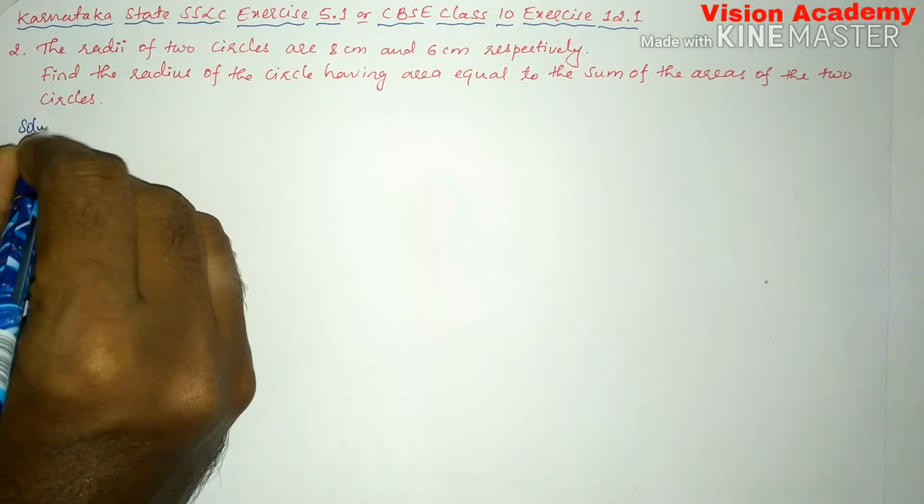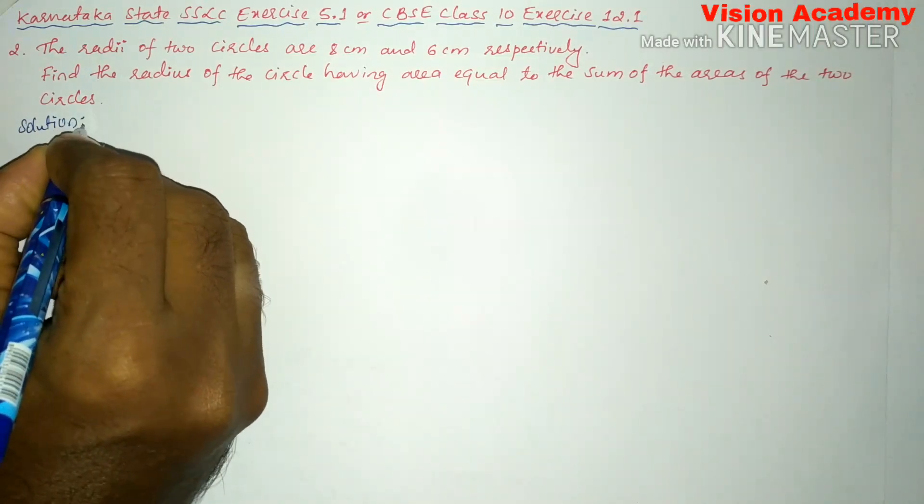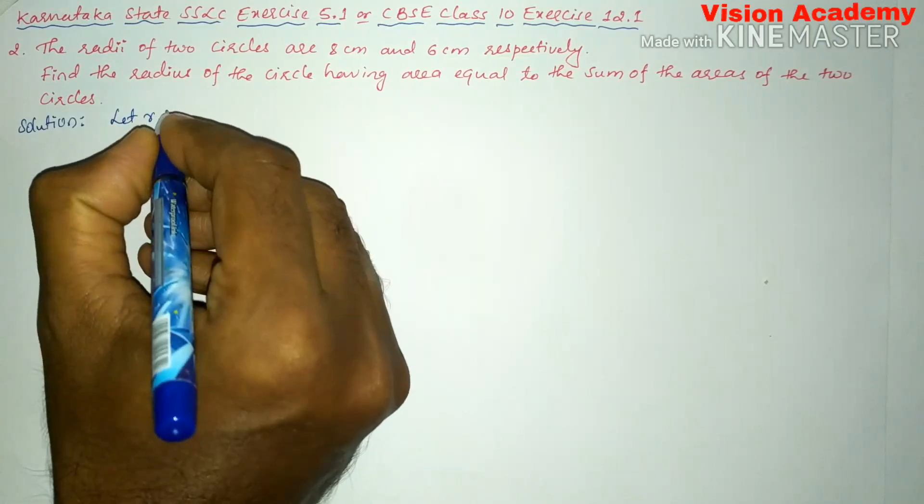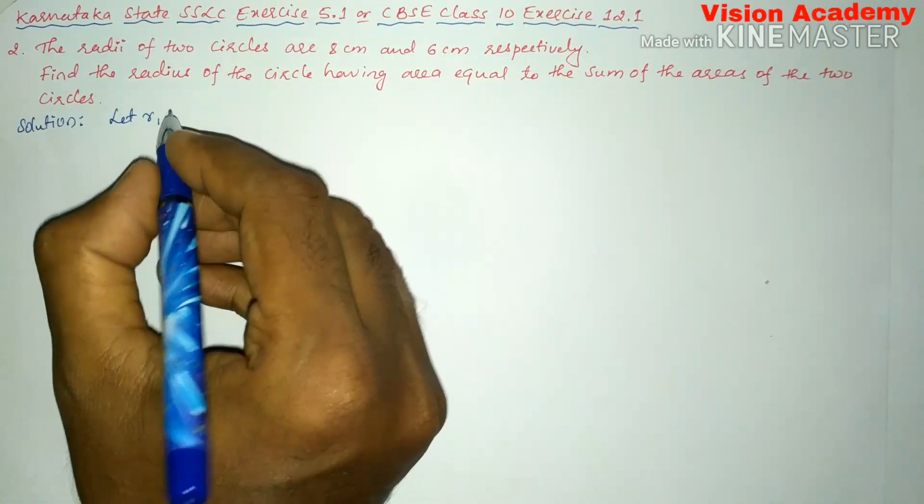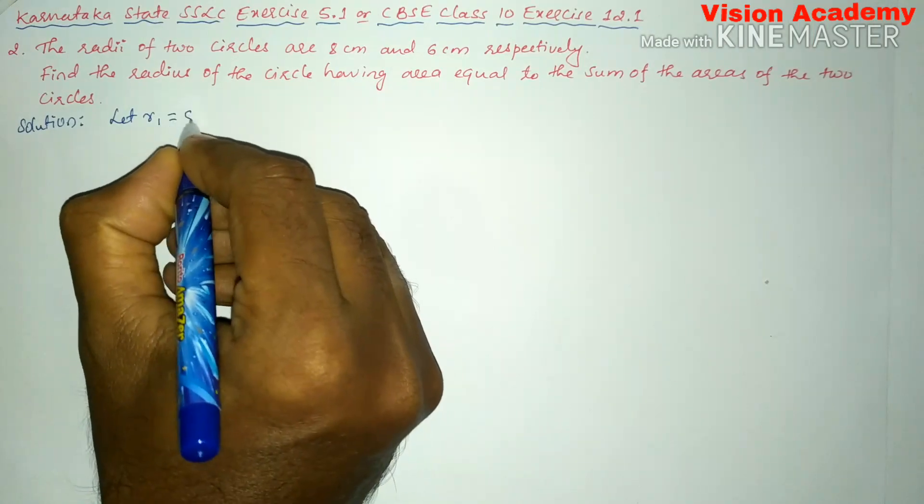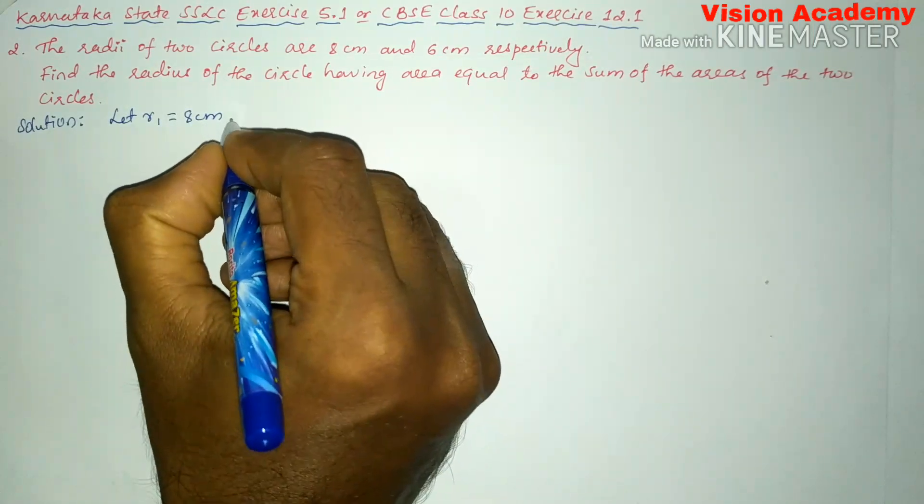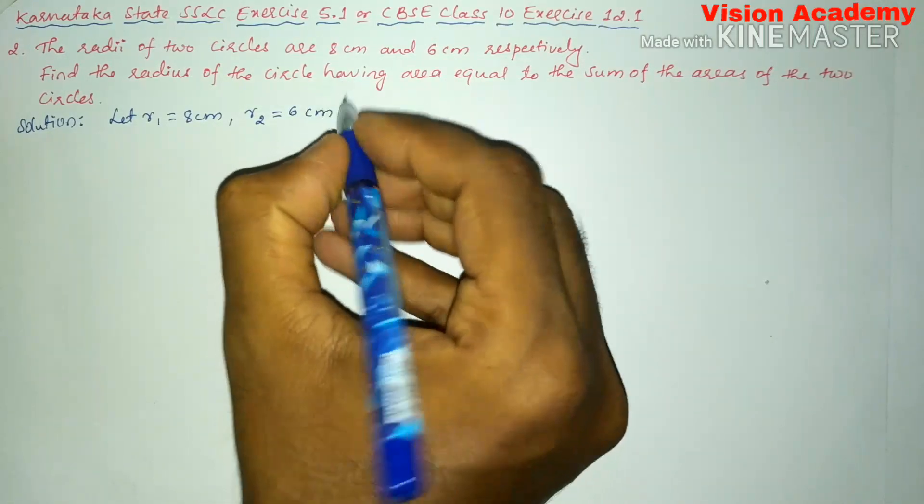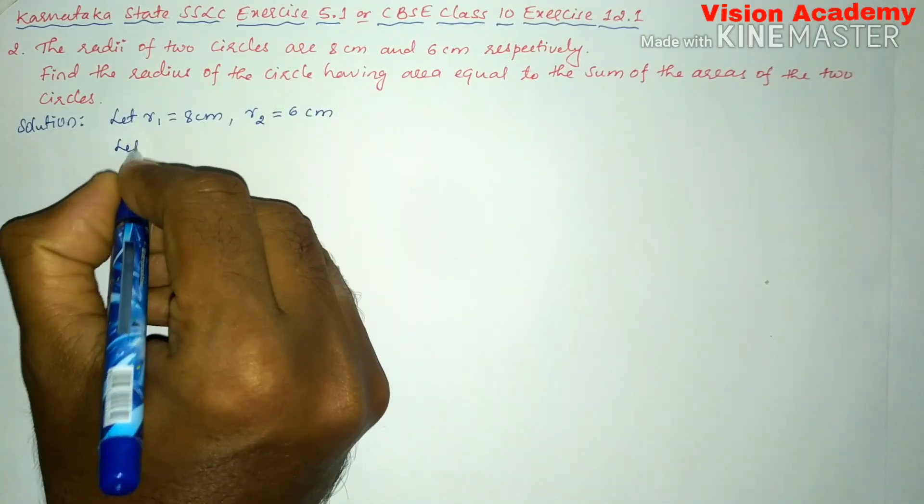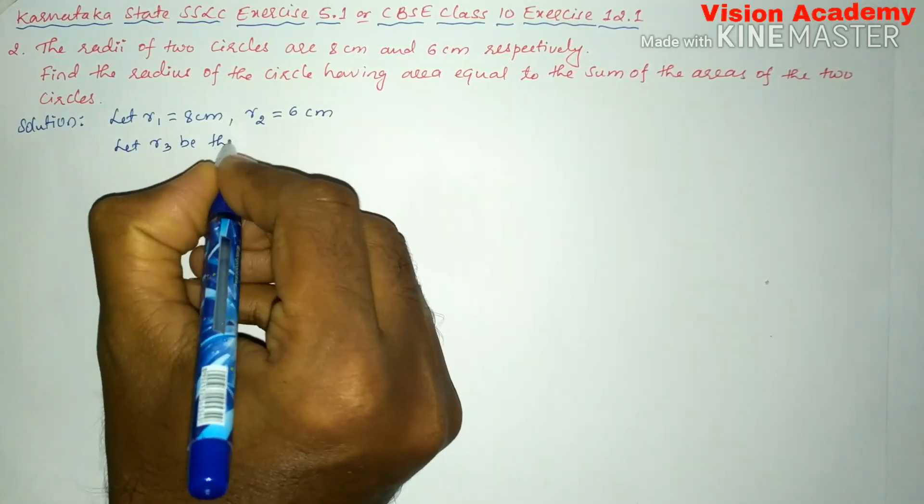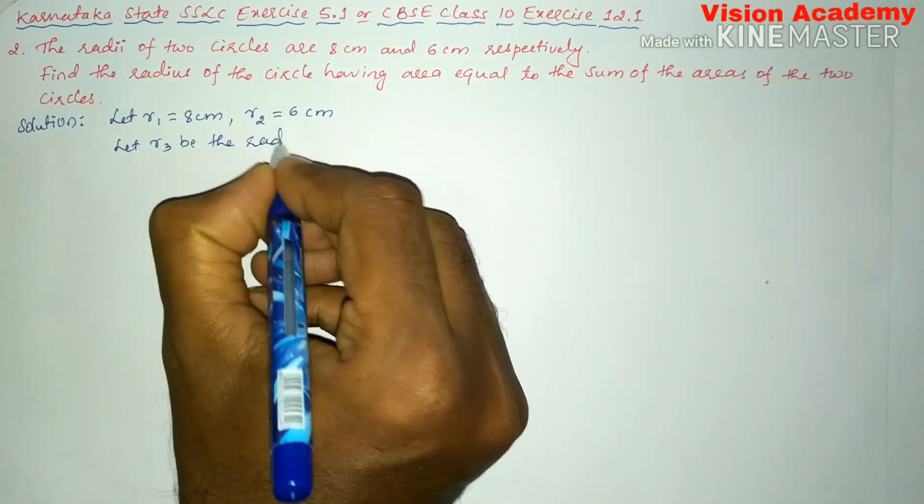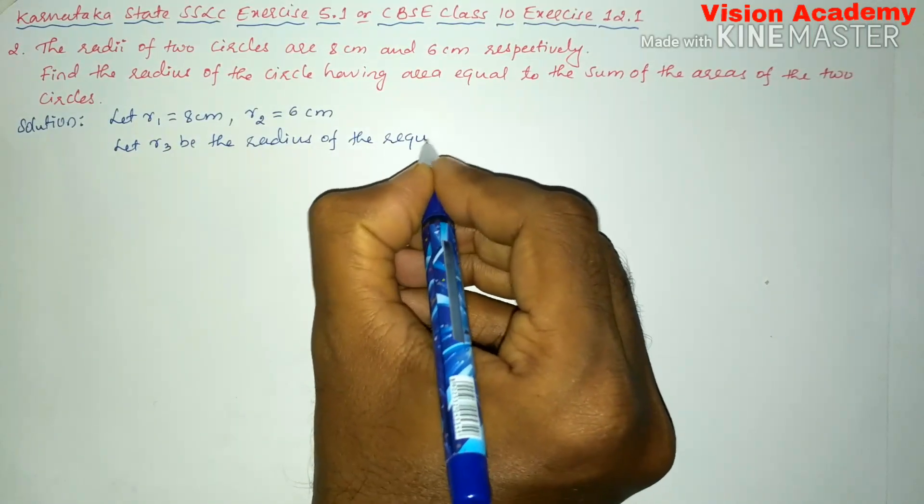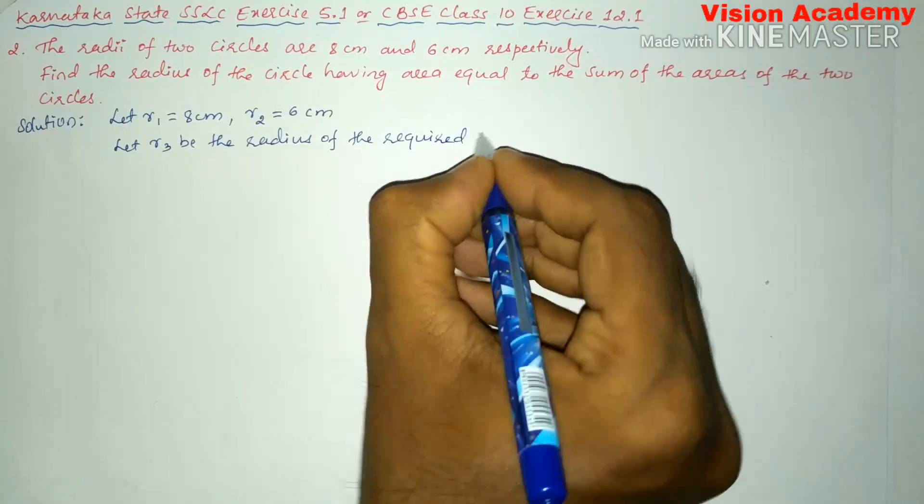Let us find the solution for the given problem. Here let R1 be the radius of the circle 1 which is equal to 8 centimeter, and R2 is the radius of the second circle which is equal to 6 centimeter. Here let R3 be the radius of the required circle.